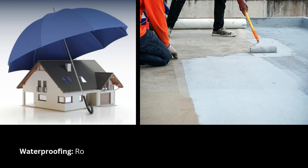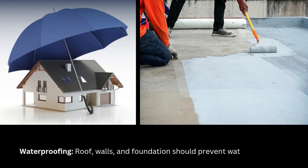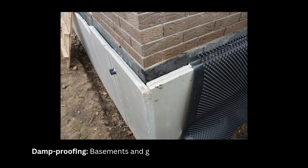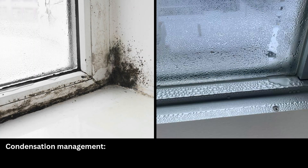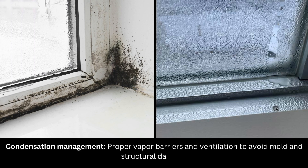Waterproofing: roof, walls, and foundation should prevent water penetration. Damp proofing: basements and ground floors need moisture barriers. Condensation management: proper vapor barriers and ventilation to avoid mold and structural damage.